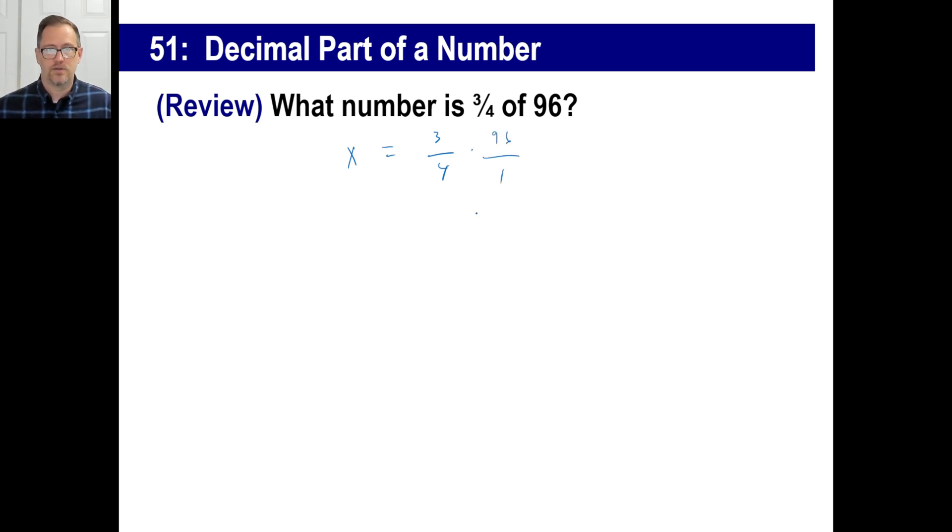Boom, boom. So you can reduce this, you can just multiply across then divide, whatever, and you will get x is equal to 72. Make sure you can set this up to where it looks exactly like this. You can just go left to right.